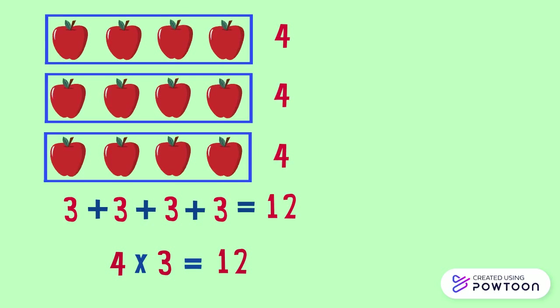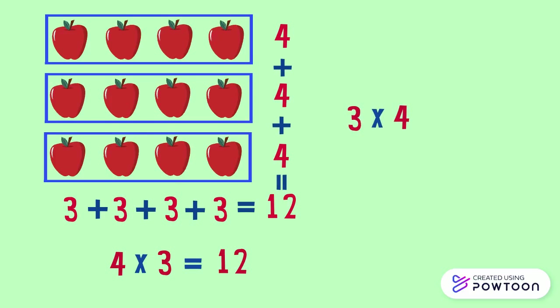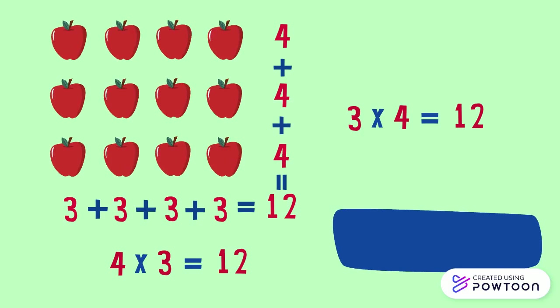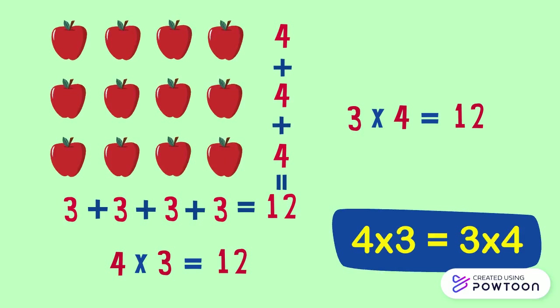So this is equal to 4 plus 4 plus 4, which equals 12. We have repeated number 4 three times, so 3 times 4 equals 12. Notice that 4 times 3 equals 3 times 4 equals 12.